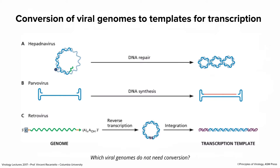For all these quasi-double-stranded DNA templates, they have to be fixed before they can be transcribed. Every virus has to make at least one protein before it can do anything else, and that's why it must make an mRNA first. Viruses like herpes, adenovirus, and poxviruses don't need conversion — their genomes are already suitable. We'll come back to this when we talk about DNA synthesis on Wednesday.